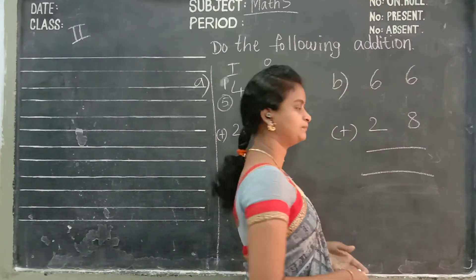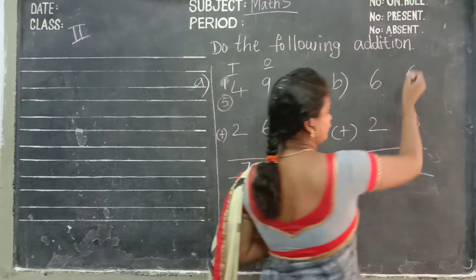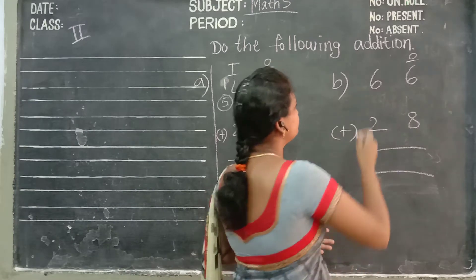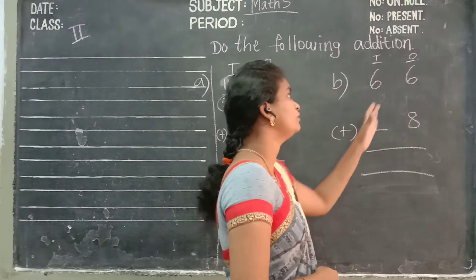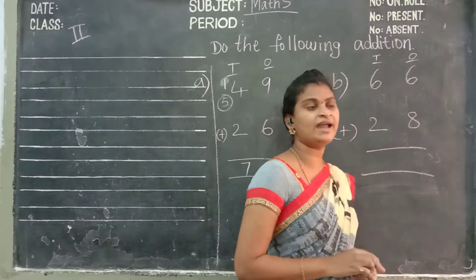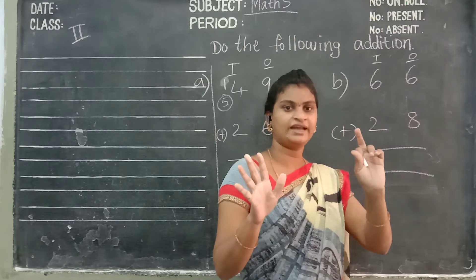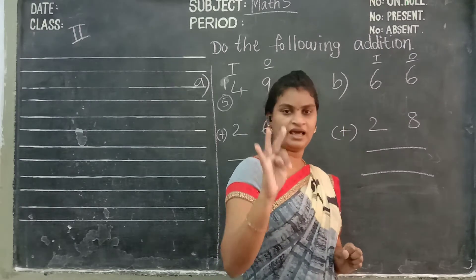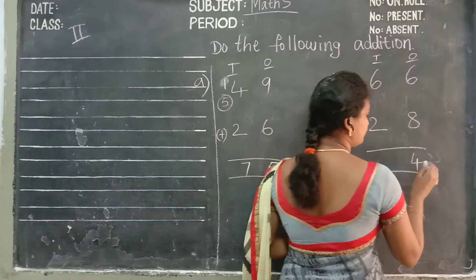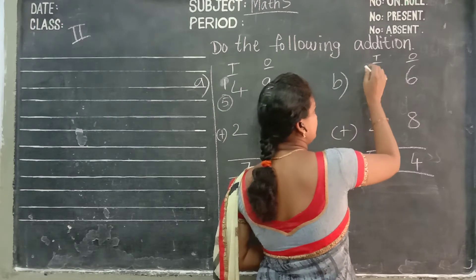Now move to B. See, 6 and 8 — which place value? 1's place. 6 and 2 — which place value? 10's place. Now add the 1's place value. 6, keep in your mind. Take 8 fingers: 6 after 7, 8, 9, 10, 11, 12, 13, 14. Right here, 4 in 1's place. 1 is in 10's place, right here, 1.